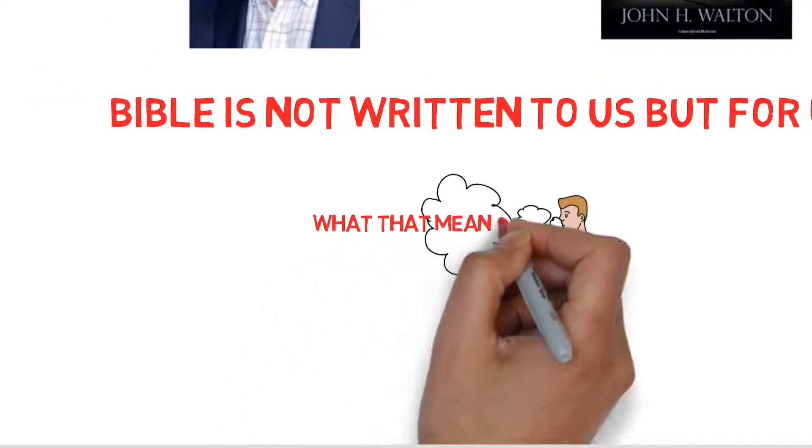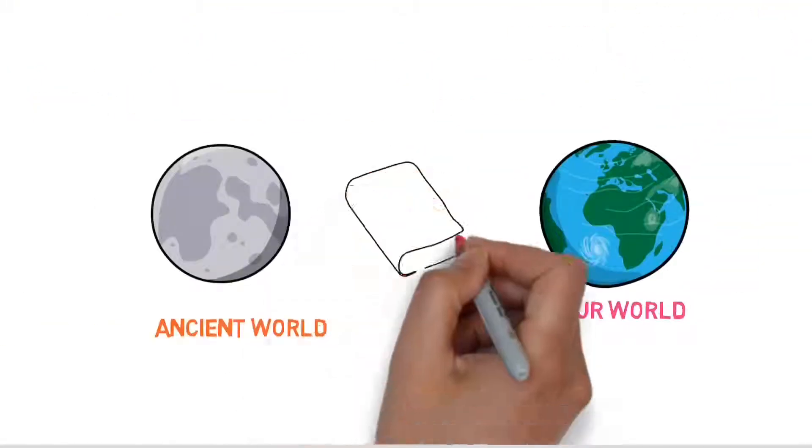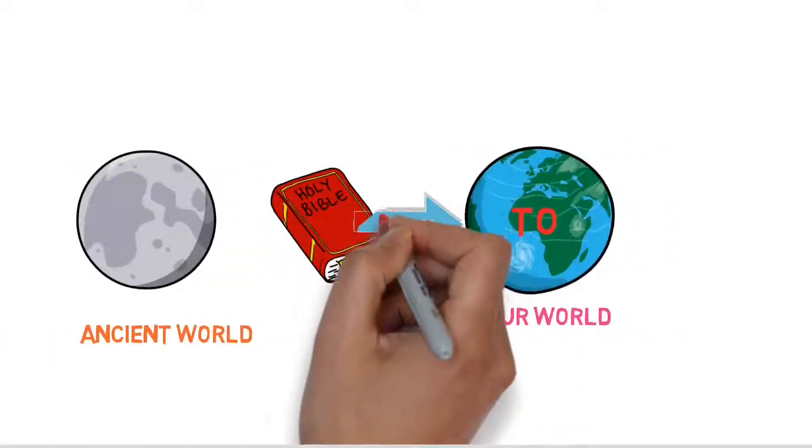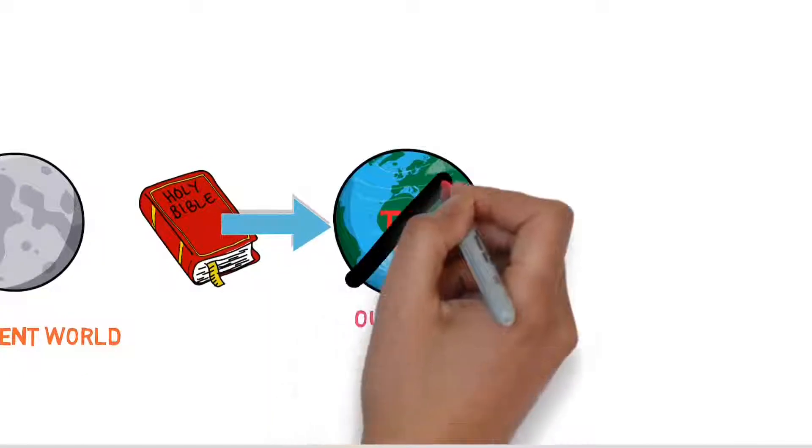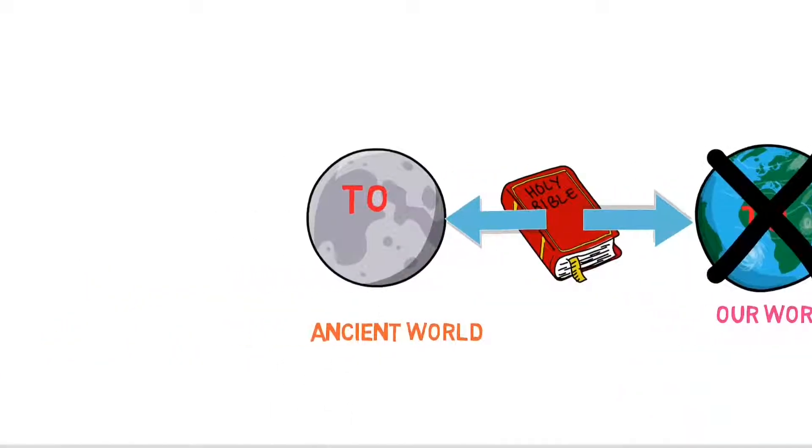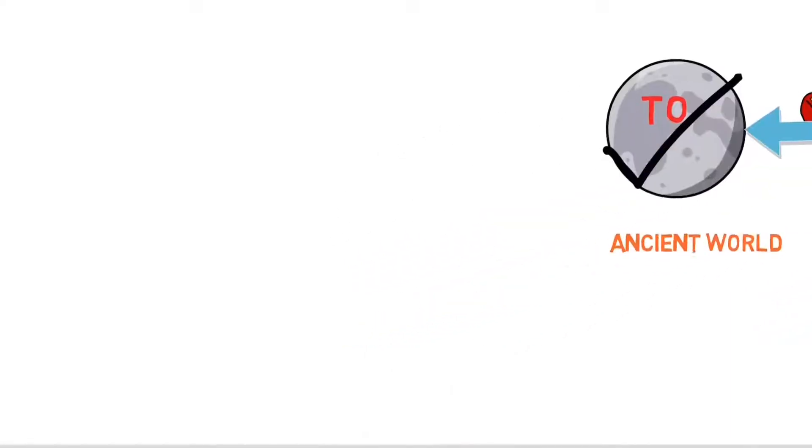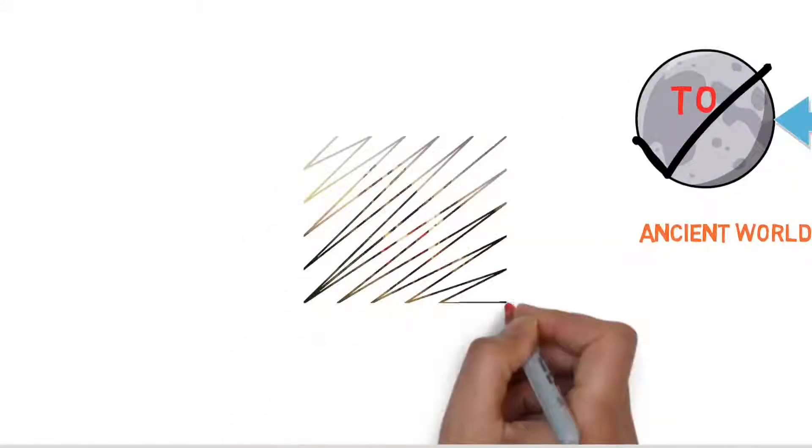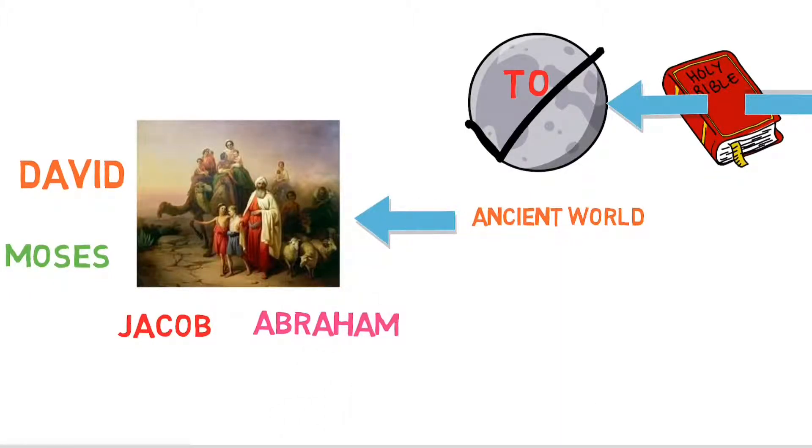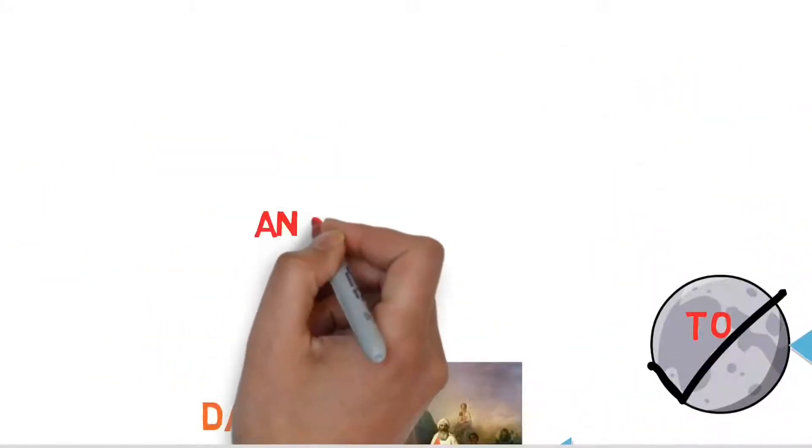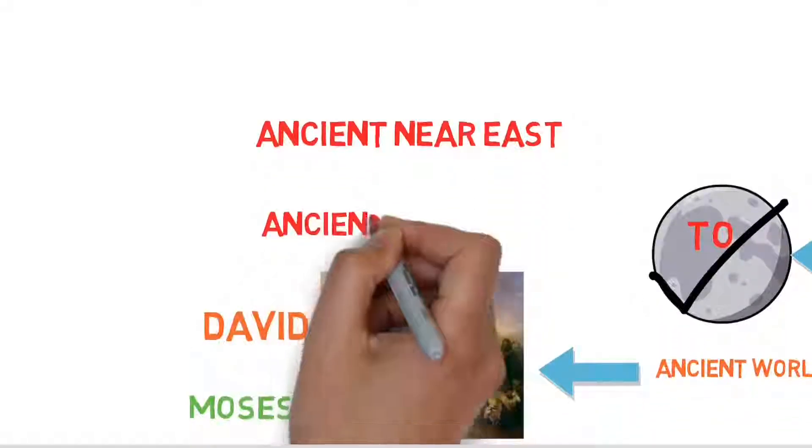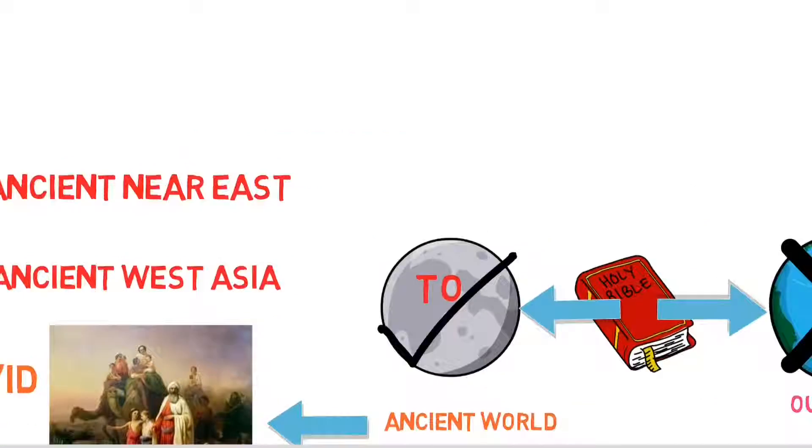Let me explain to you. When the Old Testament books were written, it was not addressed to our world, but it was addressed to ancient world. This part of ancient world where Abraham, Jacob, Moses and David lived were called ancient Near East world or ancient West Asia world.